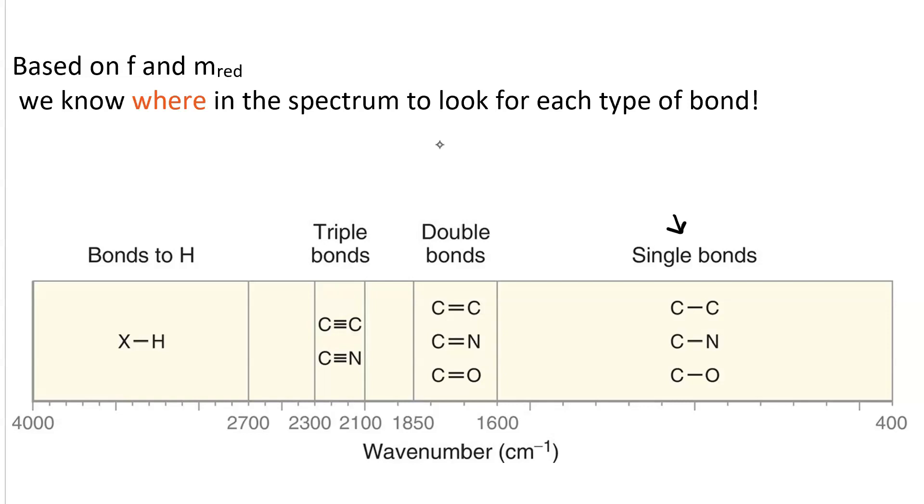Based on the effects of the force constant, we know what wavenumber is going to have a small F, and a large reduced mass, and thus, they show up at low wavenumber.